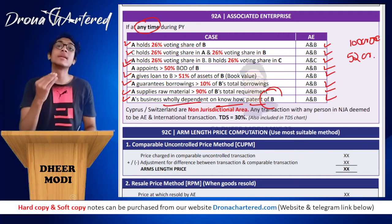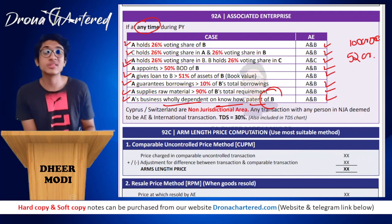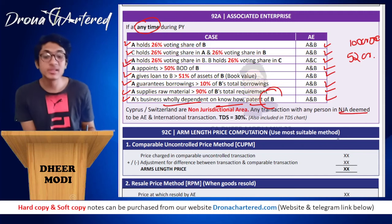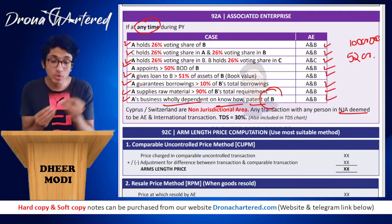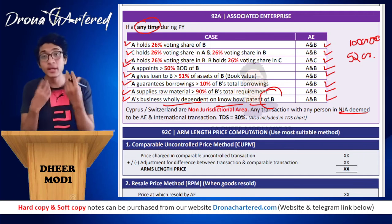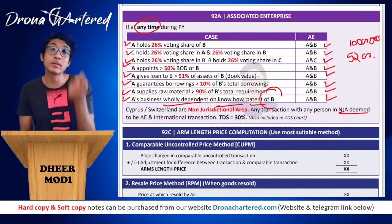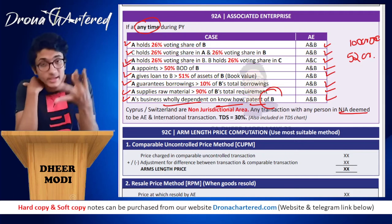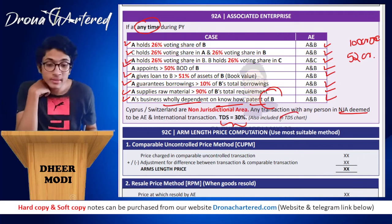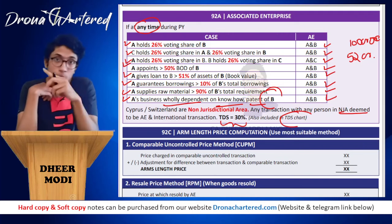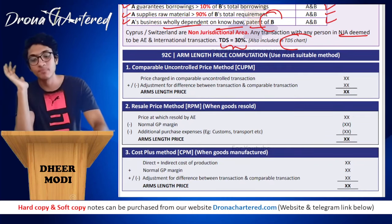Important note: if you do any transaction with a person who belongs to a non-jurisdictional area — such as Cyprus or Switzerland — that transaction will be deemed to be an international transaction with an associated enterprise, and transfer pricing provisions will automatically apply. Additionally, TDS on any transaction with persons in non-jurisdictional areas must be deducted at 30%, irrespective of the nature of the transaction.